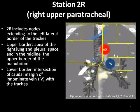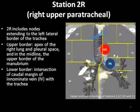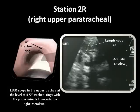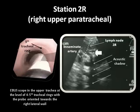Station 2R, the upper right paratracheal region, extends to the left lateral border of the trachea. The upper border is the apex of the right lung and pleural space, and in the midline, the upper border of the sternal manubrium. The lower border is at the intersection of the caudal margin of the innominate vein with the trachea. The EBUS scope is placed against the right tracheal wall in the upper trachea at the level of the 4th to 5th tracheal rings, with the transducer oriented towards the 3 o'clock position. The lymph node is seen just distal to it, and the innominate artery can be visualized in cross-section. Note the acoustic shadow artifact caused by calcification inside the lymph node.